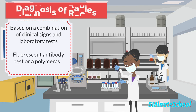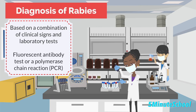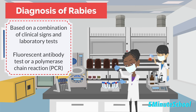The diagnosis of rabies is based on a combination of clinical signs and laboratory tests. Laboratory tests may include a fluorescent antibody test or a polymerase chain reaction (PCR) test to detect the presence of the virus in samples of saliva, cerebrospinal fluid, or a skin biopsy.